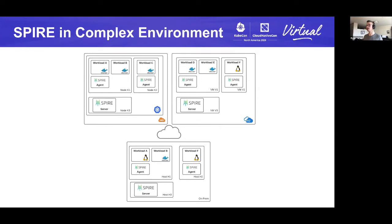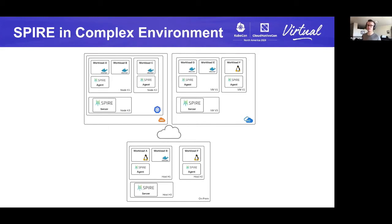In Azure, imagine you have a virtual machine running SPIRE server, which is addressable and routable from other virtual machines in that environment. Agents on different virtual machines can connect to the server and receive identities for the workloads running in those VMs — whether Docker-based workloads or native Unix processes. Similarly for on-prem, you may have bare metal hosts running in a data center. SPIRE can also work there: you can have different hosts running SPIRE server and agents running on the hosts in your infrastructure, supporting a variety of workloads. So it's very adaptable.